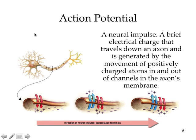Action potential is the neural impulse — an electrical charge that travels down an axon, generated by the movement of positively charged atoms in and out of the channels of the axon's membrane. The movement of these positively charged atoms allows for communication between one neuron and the next. Depending on the fiber, neural impulses can travel at speeds ranging from 2 miles per hour to 200 miles per hour. Neurons interweave together so tightly that it's hard to see where they begin and end, even with a microscope.